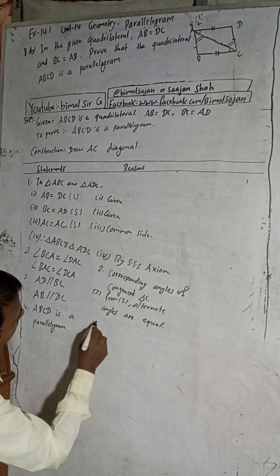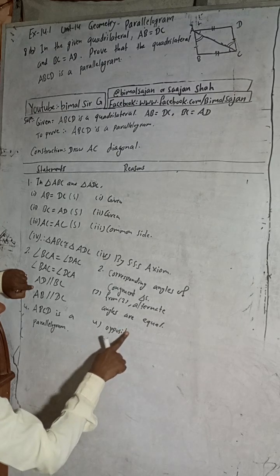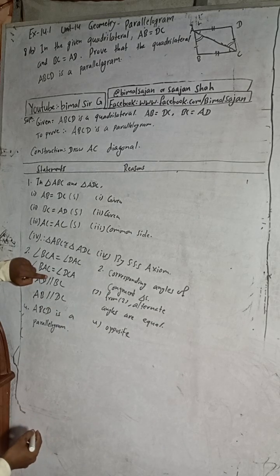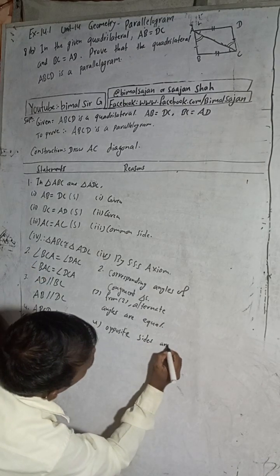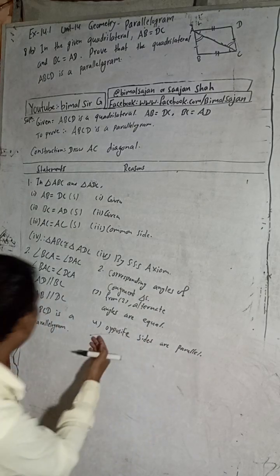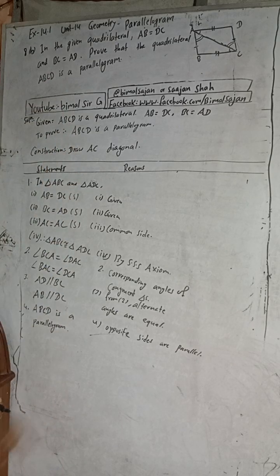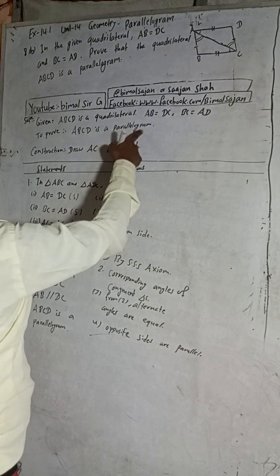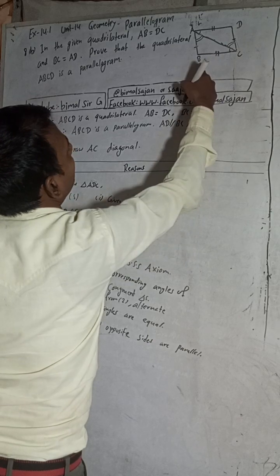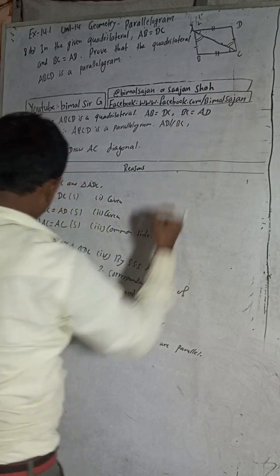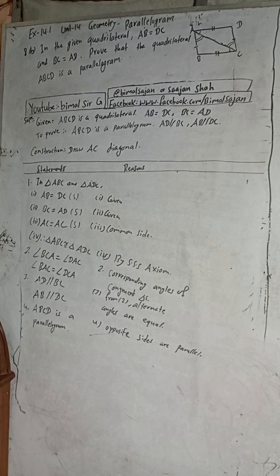Therefore ABCD is a parallelogram — because the opposite sides are parallel. When AD is parallel to BC and AB is parallel to DC, the quadrilateral is proved to be a parallelogram. So it is proved. This is the required solution for class 9 and 10 students.